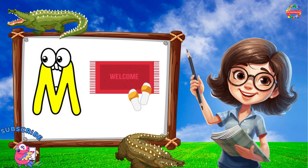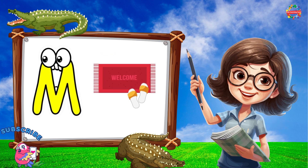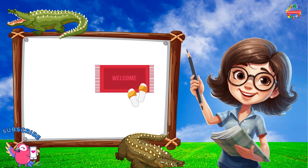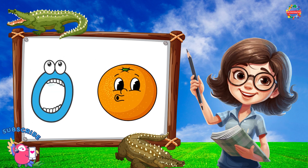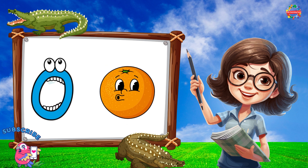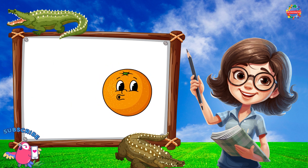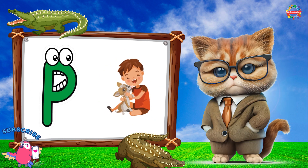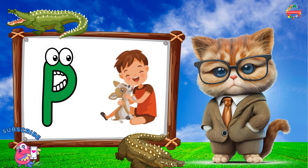M is for Mat, M-M-Mat. N is for Net, N-N-Net. O is for Orange, O-O-Orange. P is for Pet, P-P-Pet.